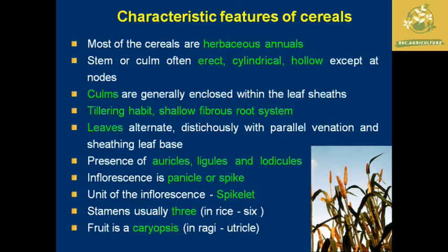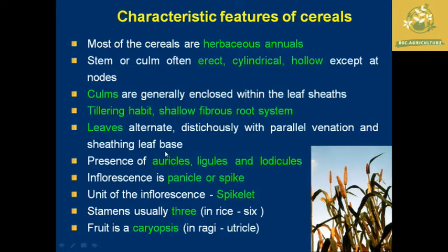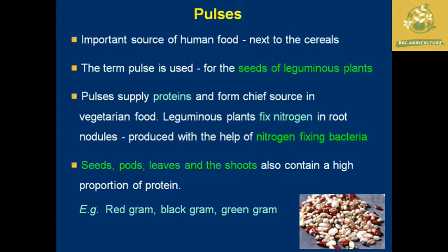The inflorescence of cereals is mainly a panicle or spike, and the unit of inflorescence is called a spikelet. Important floral characteristics include stamens, which are usually three — except in rice, where there are six. The fruit of cereals is known as a caryopsis, but in ragi it is called a utricle. These are the major characteristics of cereals.